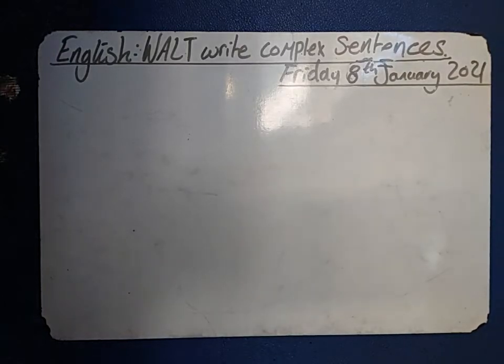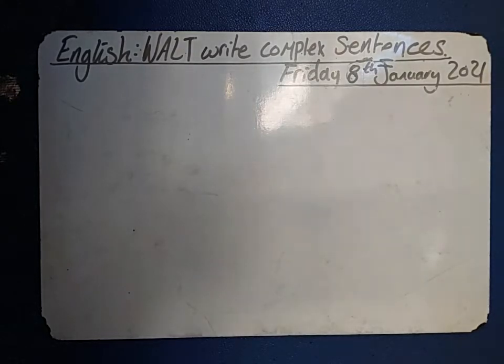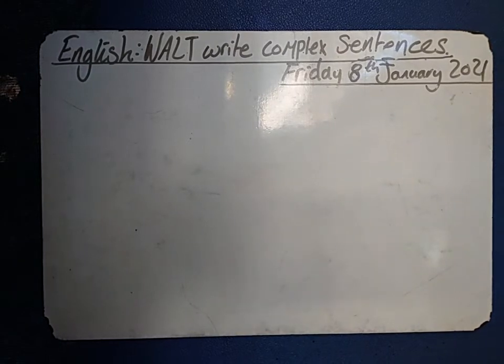Good morning Essex, this is your English WALT: Write Complex Sentences. Today's date is Friday the 8th of January 2021. Could you please put that in your books in blue pen and align with the ruler.